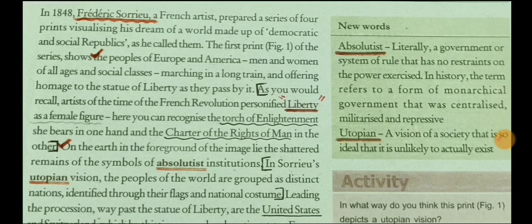On the ground you can find crowns belonging to kings and queens, the sceptre they used to hold, and badges. These objects symbolize the absolute form of government. They are lying on the ground because in Sauryu's utopian vision, the peoples of the world are grouped as distinct nations, identified through their flags and national costumes.